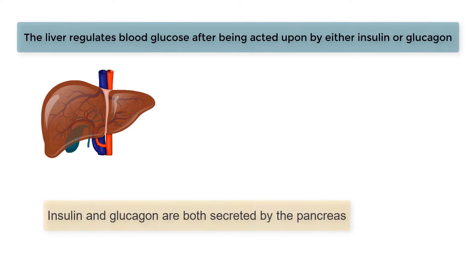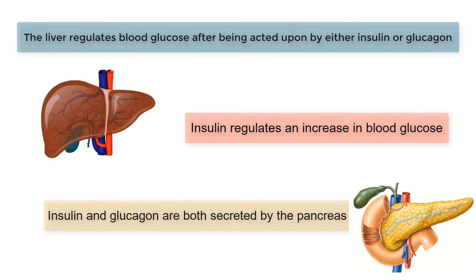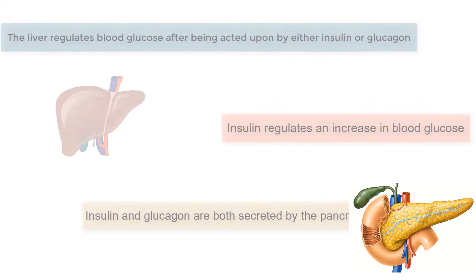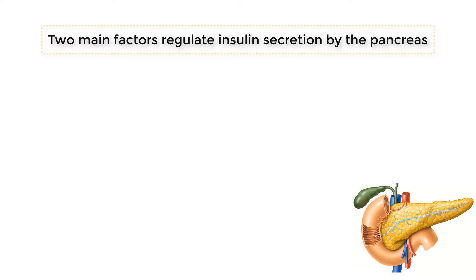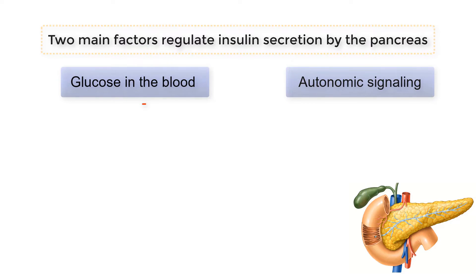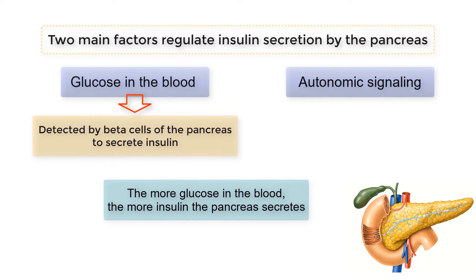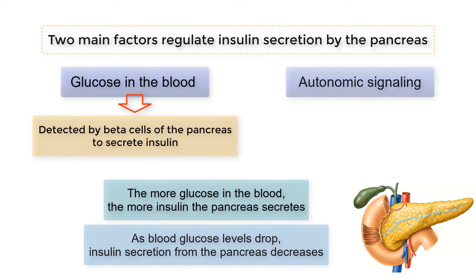Insulin and glucagon are both secreted by the pancreas. Insulin regulates an increase in blood glucose. Two main factors regulate insulin secretion by the pancreas. Glucose in the blood is detected by beta cells of the pancreas to secrete insulin. The more glucose in the blood, the more insulin the pancreas secretes. And as blood glucose levels drop, insulin secretion from the pancreas decreases.